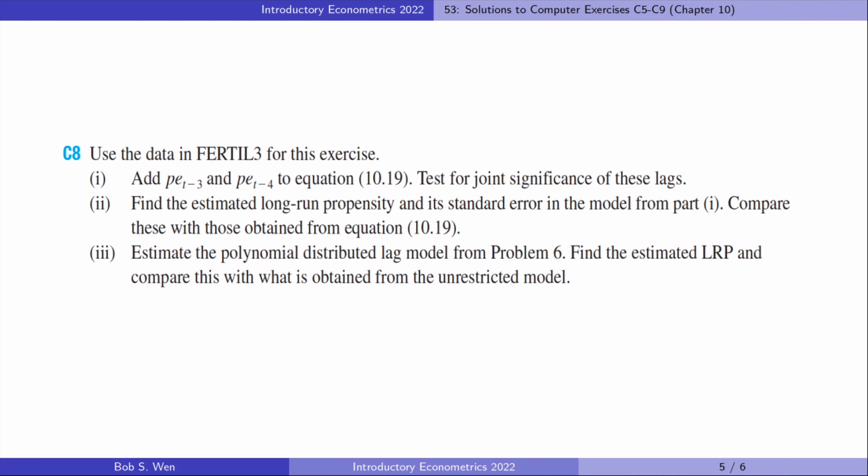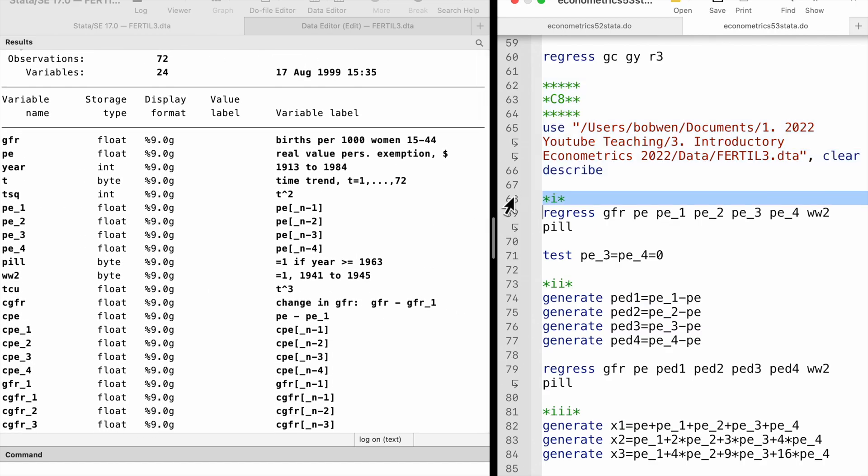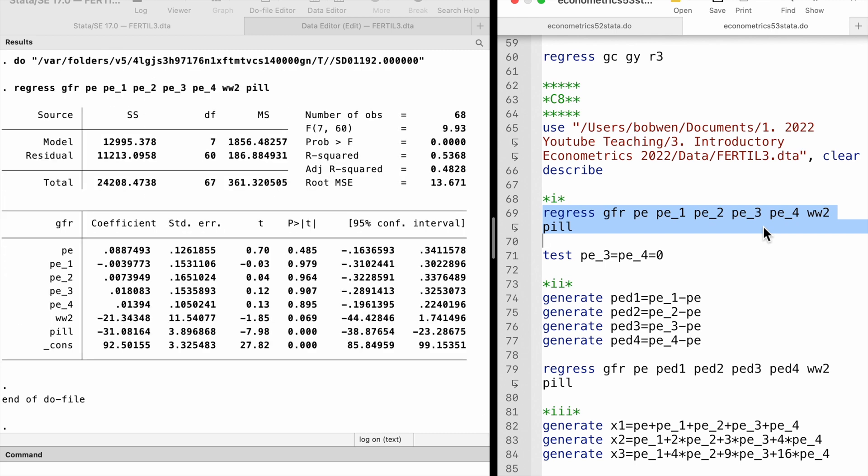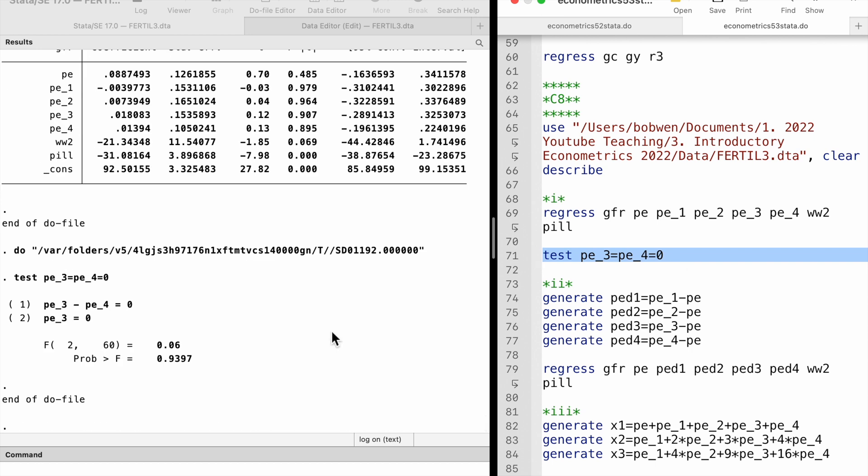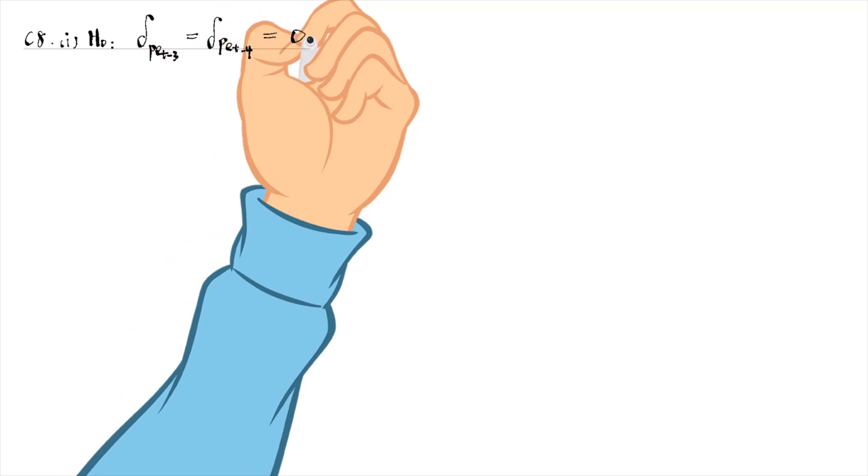Let's do computer exercise 8. We add the 3rd and 4th lags of the personal tax exemption to the model and use the test command to perform the F-test for their joint significance. The F-statistic is 0.06 and its p-value is 0.9. We fail to reject the null hypothesis that both are 0 at any reasonable level.